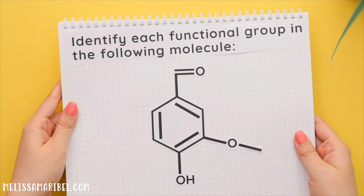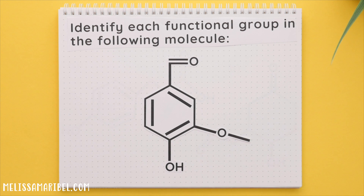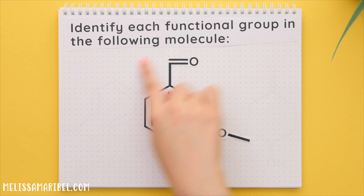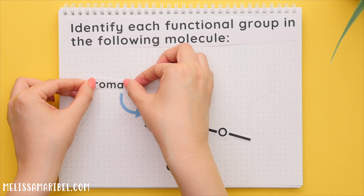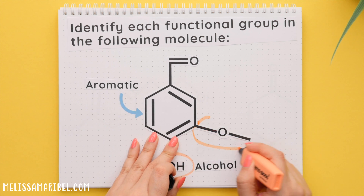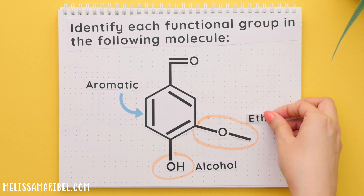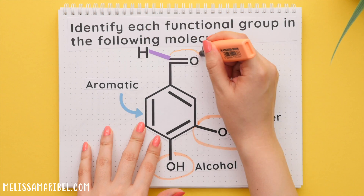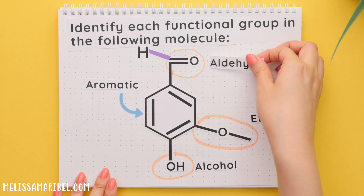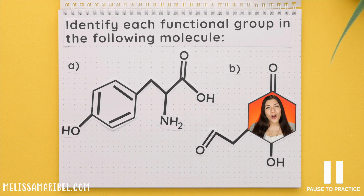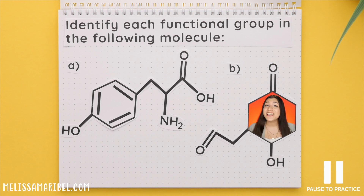Here is a potential quiz or test question. We are asked to identify each functional group in the following molecule. We have a benzene ring which is aromatic. This OH tells us it's an alcohol. Here we have two R groups and an oxygen in the center, which is an ether. And on top, note there is actually a hydrogen here making this an aldehyde. Try these two on your own and then I'll walk you through all of the answers plus let you know what common mistakes to look out for.